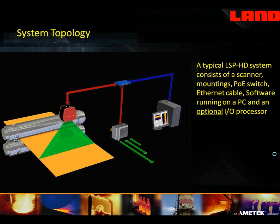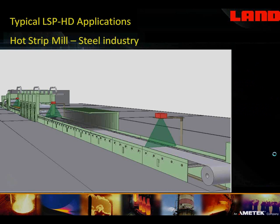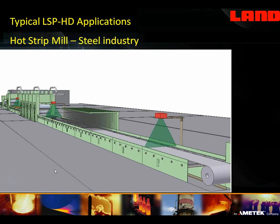This is a typical use of scanners on a hot strip mill. In this particular case, we've got a scanner up at the exit of the roughing stands, and it's seeing the temperature of a slab as it has just been roughed, making sure that it has a uniform temperature from edge to edge. A second scanner just after the finishing stands is doing the same thing. If one side of the strip were hotter than the other, it will roll thinner easier and it will produce camber problems.